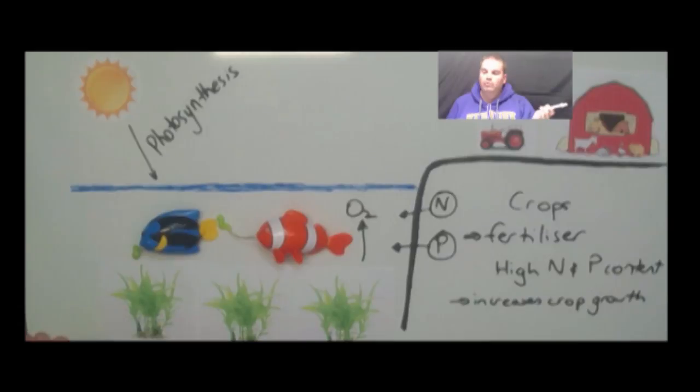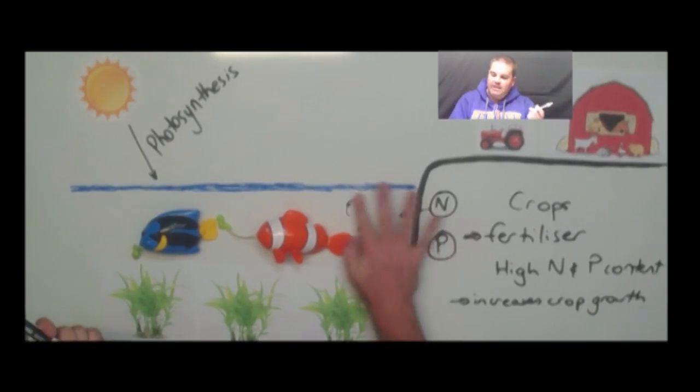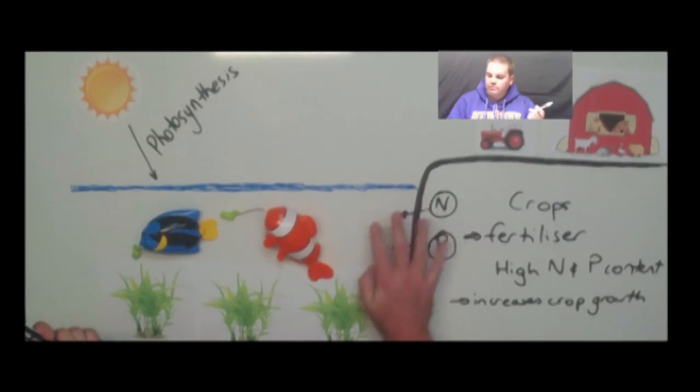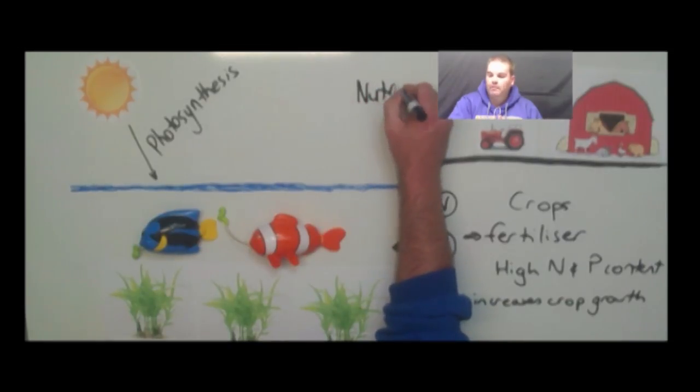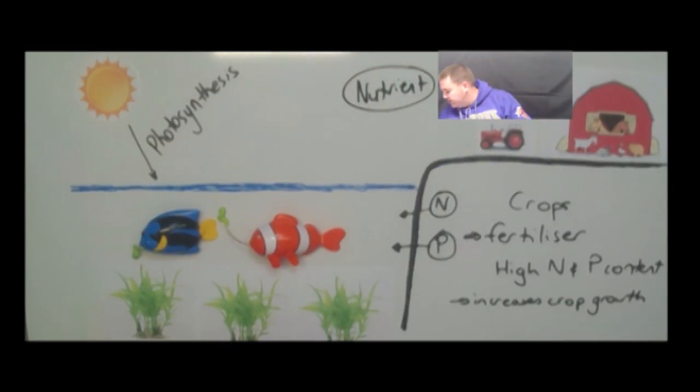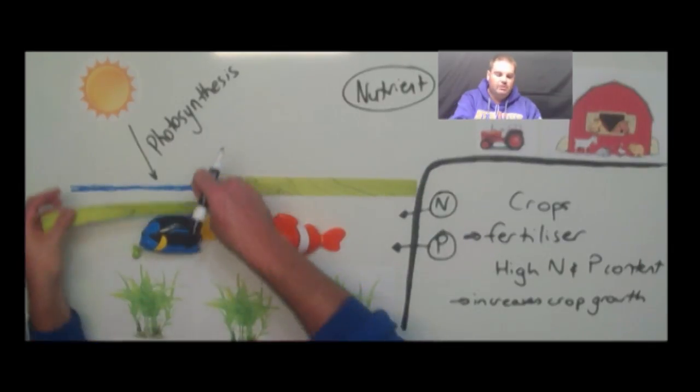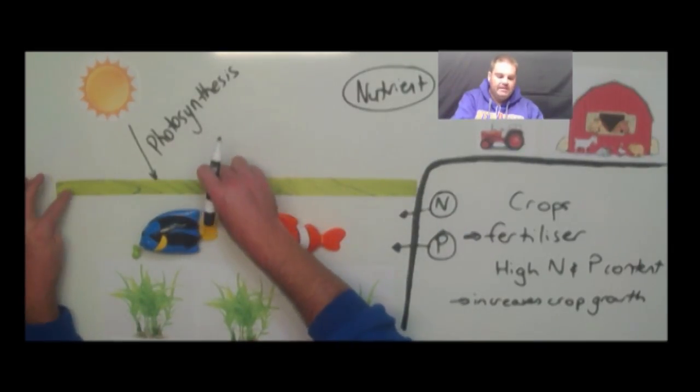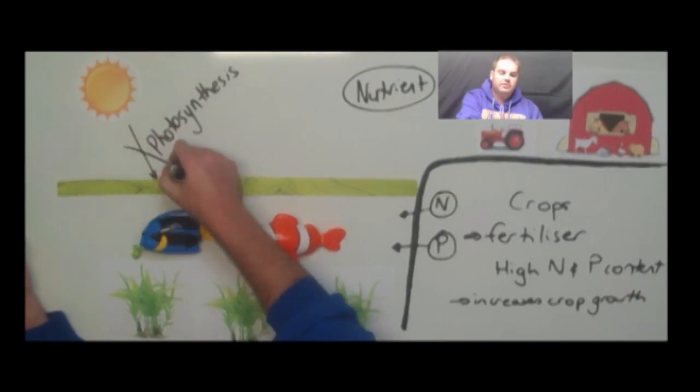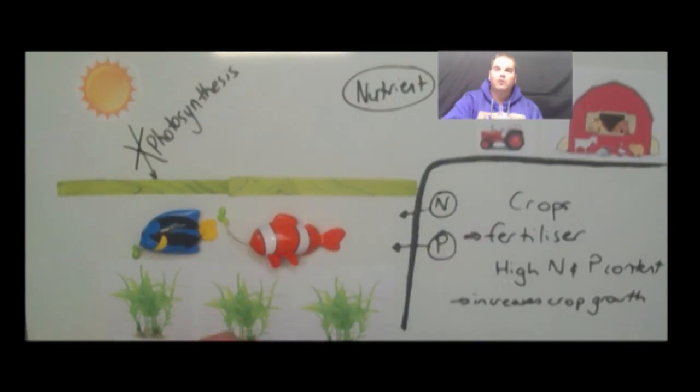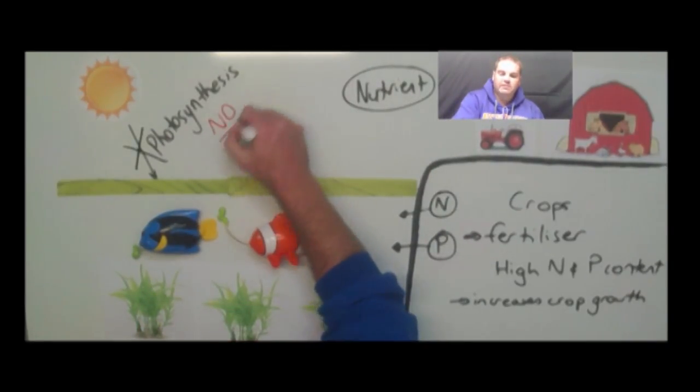Now what happens when we go through eutrophication is a number of things happens. But the first thing is that this increased nitrogen and phosphorus in the waterways acts as a nutrient for algae. So what happens is algae, which is a very fast growing plant, starts to grow and covers the surface of the water. So as this algae starts to cover the surface of the water, what happens is that it blocks photosynthesis. So we can no longer have photosynthesis occurring.